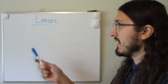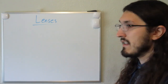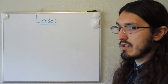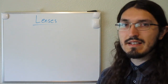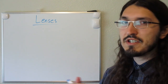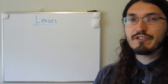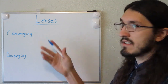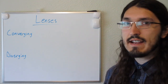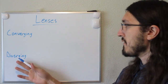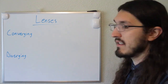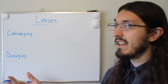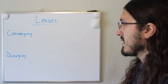Today's video I want to focus on lenses and the two different types of lenses. The two different types of lenses are converging lenses and diverging lenses. Converging lenses converge light while diverging lenses diverge light, so the function of the lens is in the name.